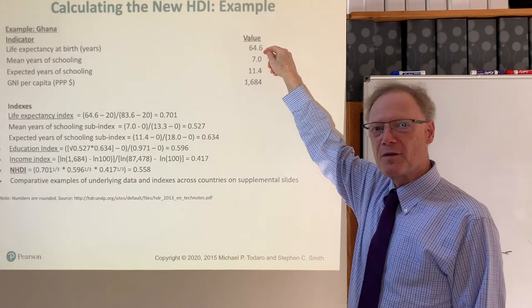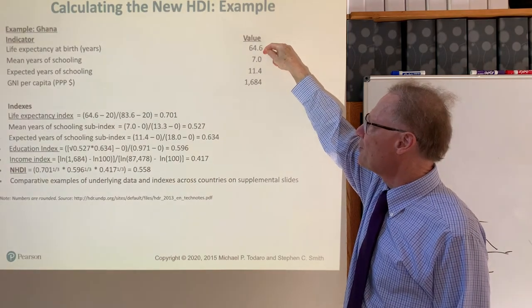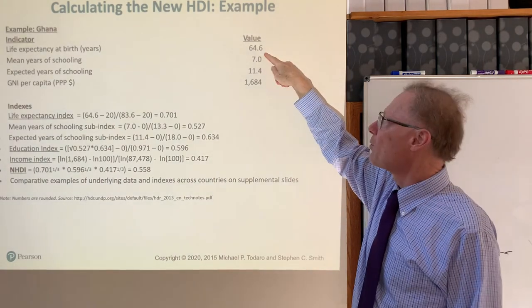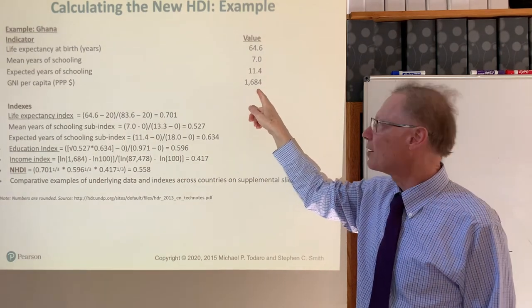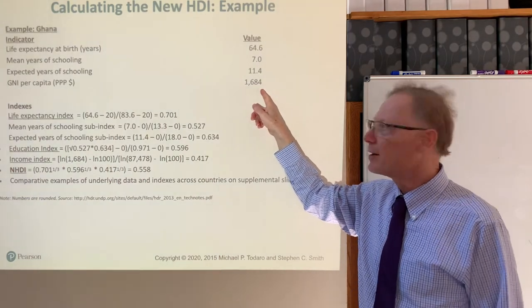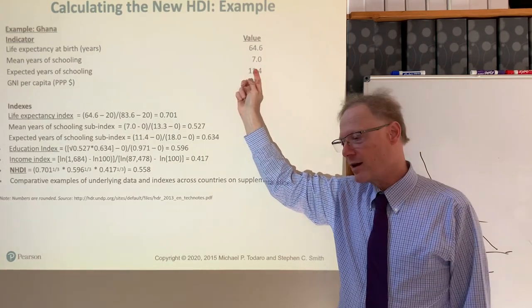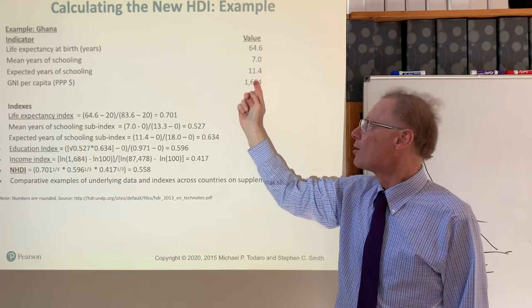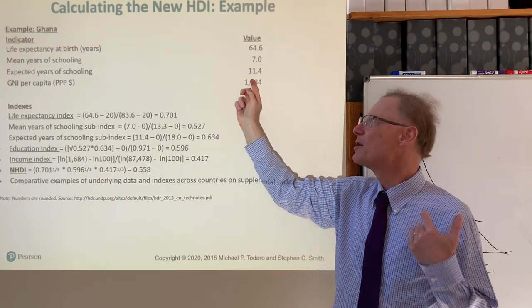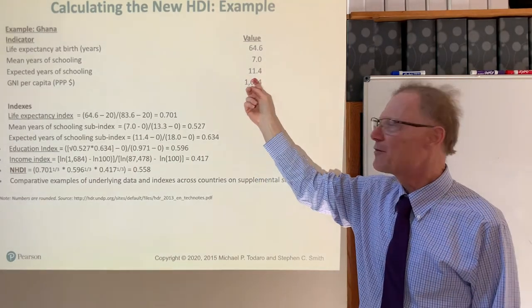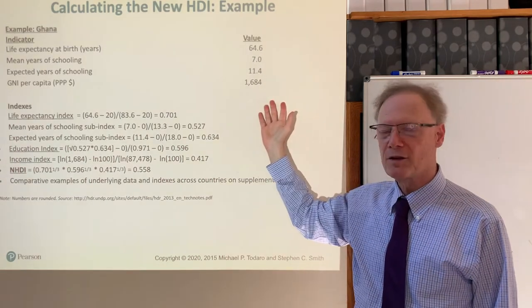For Ghana in this year — roughly six or seven years ago — the life expectancy at birth was 64.6 years. The GNI per capita was 1,684 in purchasing power parity adjusted terms. The average person in Ghana had seven years of schooling, and it was estimated that a child born at that point could be expected over their lifetime to attain 11.4 years of schooling. This is the underlying data for calculating Ghana's Human Development Index.